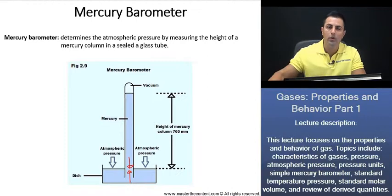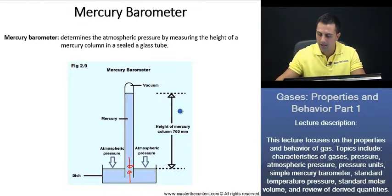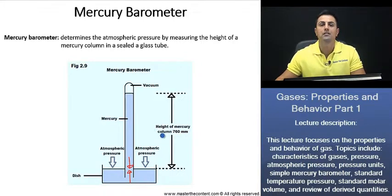And at that point, we can use the height of the mercury column to find the atmospheric pressure. And the height of the mercury column at that point is going to be 760 millimeters. And that is at standard atmospheric pressure at sea level.